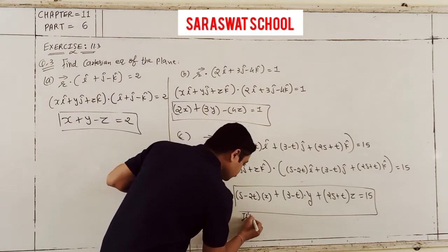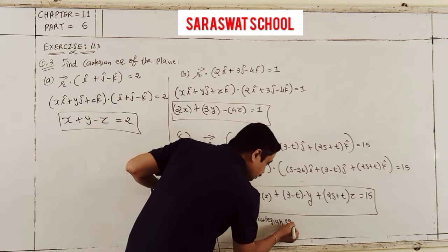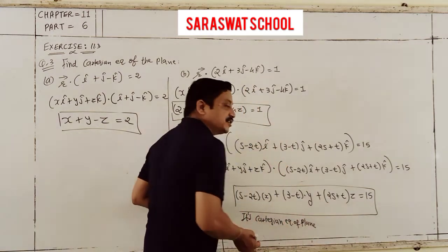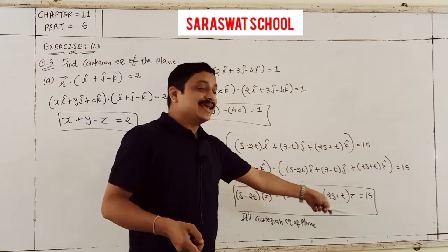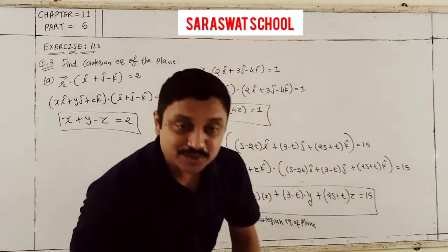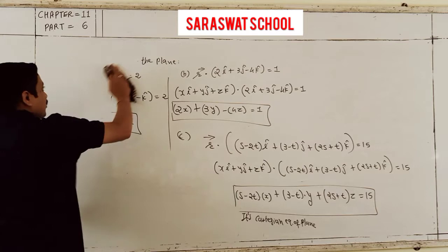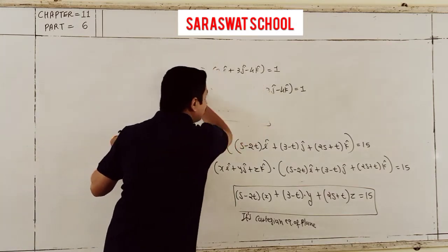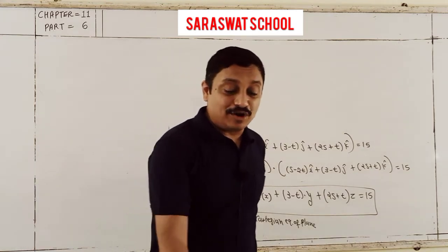That is the Cartesian equation of the plane, which you know as Lx plus My plus Nz is equal to D. Now continuing to question number 4: in the given plane, find out the foot of perpendicular from the origin. You already know the normal form of the plane.